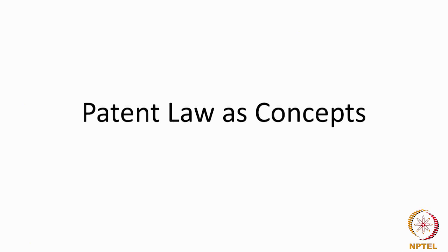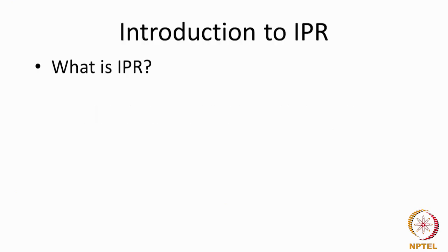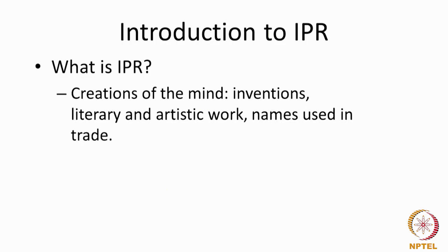Patent law comprises different legal concepts and together they form the branch of law called intellectual property rights. But before we understand patents, we need to understand what intellectual property rights are. An IPR or intellectual property right is a set of rights that come out of the creations of mind. For instance, inventions are protected by means of patents, literary and artistic works are protected by the copyright regime, and names used in trade and businesses are protected by the trademark regime.